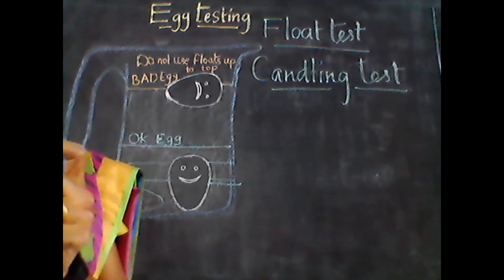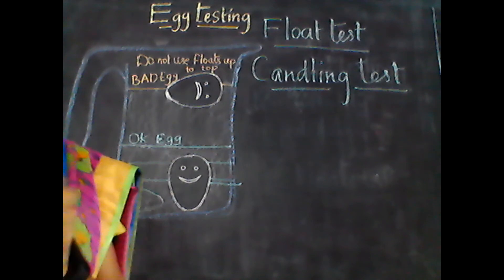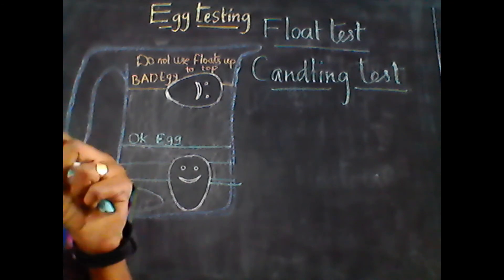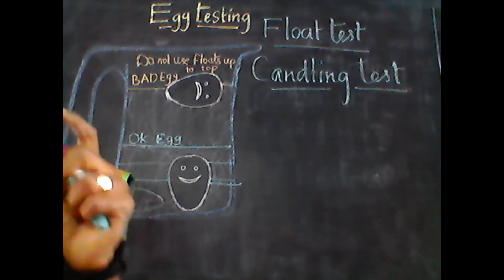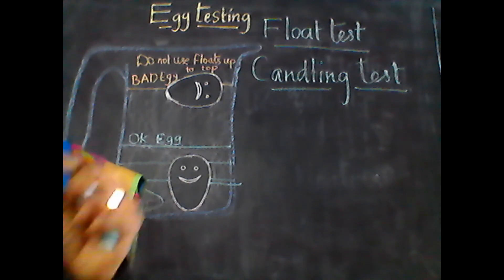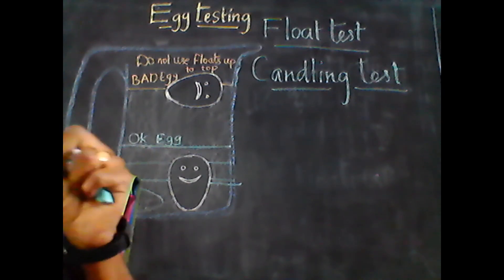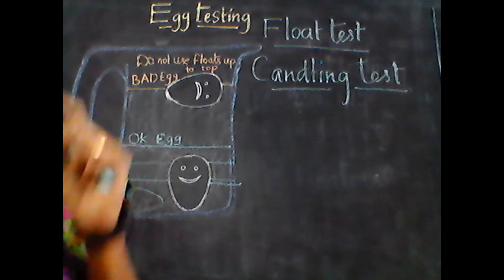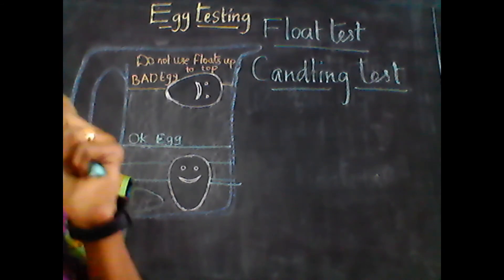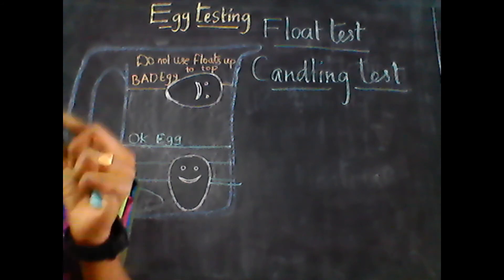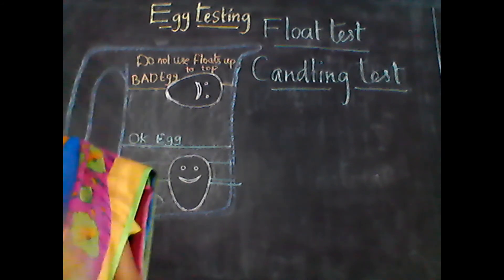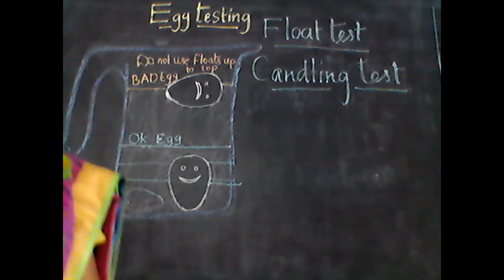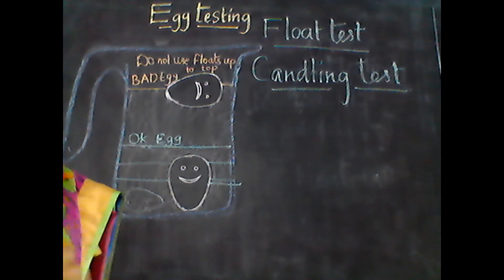In a late-stage alive egg, there is complete development of the embryo and only the air space is clearly seen. Light cannot pass through as the entire space is occupied by the growing embryo. Infertile eggs and early dead embryos appear clear.